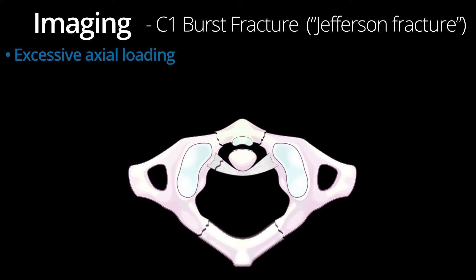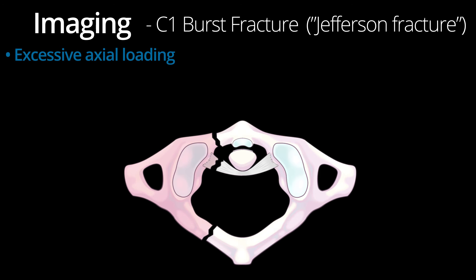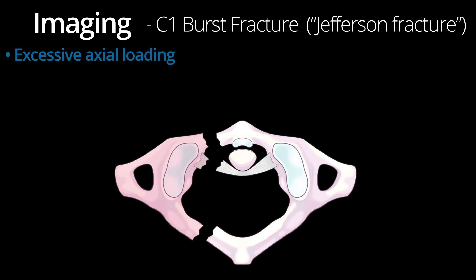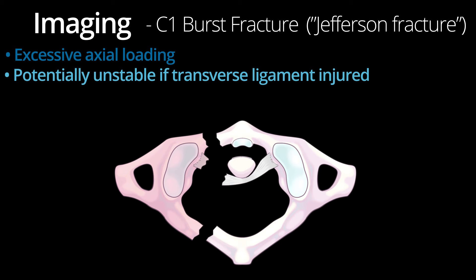Fractures can also be isolated to the anterior arch, posterior arch, or primarily involve a lateral mass. If the lateral mass is displaced laterally, or the atlantodens interval is widened, this is concerning for transverse ligament injury, which would likely make the injury unstable.